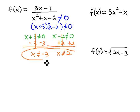These two values describe our domain. x is not equal to negative 3 and not equal to 2. This means we can use any value for x in this function, and it will work and give us a defined rational expression. However, we cannot use negative 3 or 2.